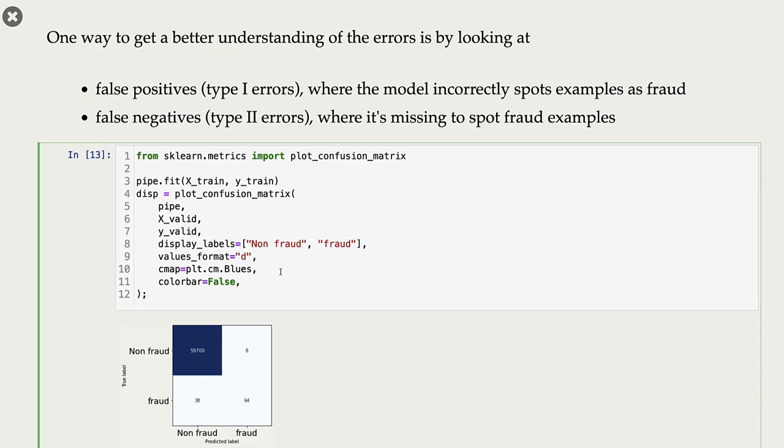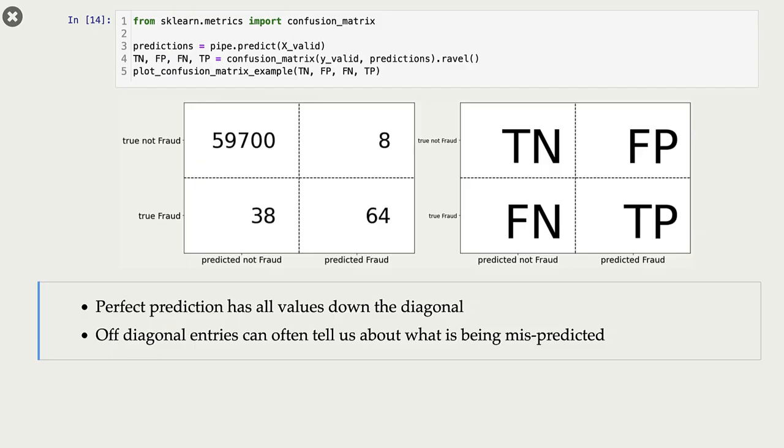As I said, confusion matrix gives us information about true negatives, true positives, false negatives, and false positives. In our case, we are considering non-fraudulent transactions as negatives and fraudulent transactions as positives. Let's try to understand these numbers in a confusion matrix.